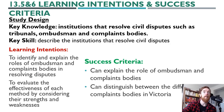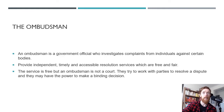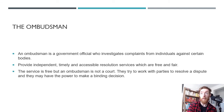We want to know about institutions that resolve civil disputes such as tribunals, Ombudsman and Complaints Bodies. We've already talked about tribunals, so now it's about Ombudsman and Complaints Bodies. An Ombudsman is a government official who investigates complaints from individuals against certain bodies. They provide independent, timely and accessible resolution services which are free and fair.